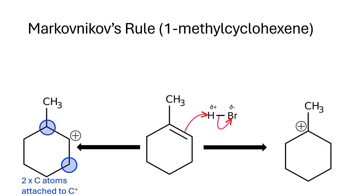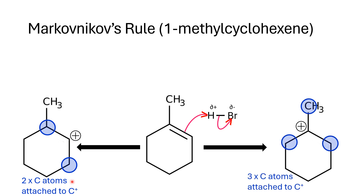On the left-hand carbocation, there are two carbon atoms attached to C+. On the right-hand side, there are three carbon atoms attached to C+.